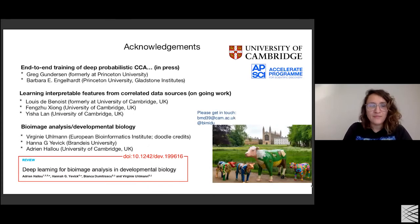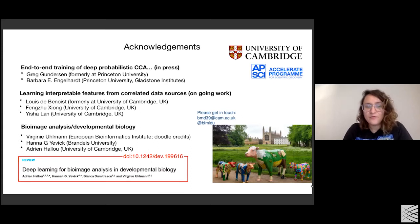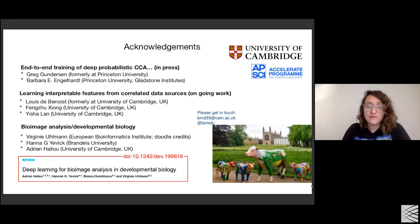I'd like to acknowledge my coauthors on the paper on end-to-end probabilistic CCA, as well as my master's student Louis and my collaborators from Cambridge University, Feng Shuzhong and his graduate student Isha Lan. A special thanks to Virginia Woolman, who is both the artist of the wonderful doodles and a terrific scientist at the EBI, and Hannah Yevick and Adrian Halou — we wrote a recent developmental biology review paper on how to properly use deep learning for bio-image analysis. Some of the ideas I talked about here are echoed in that review paper.